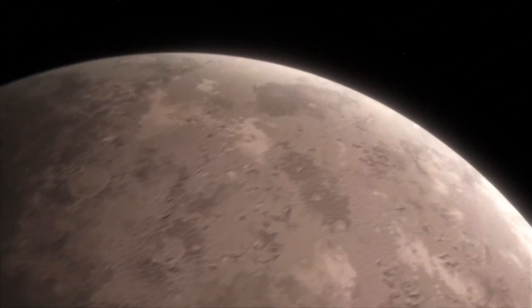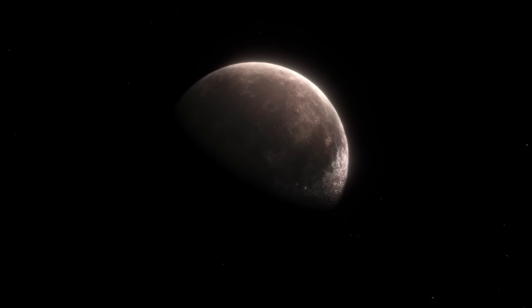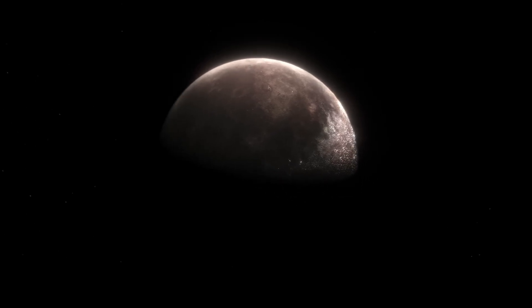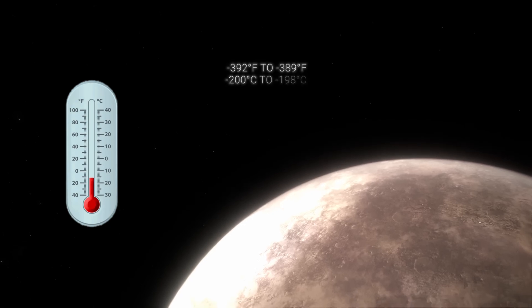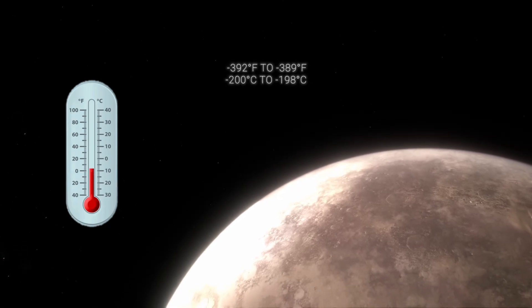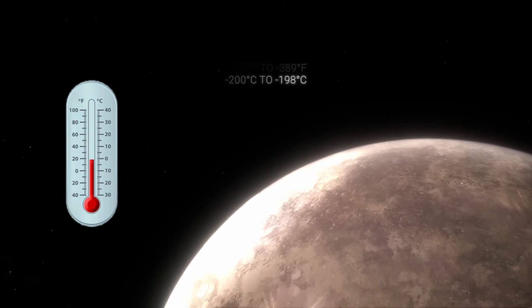Despite Triton's nitrogen-rich atmosphere, its low temperatures make it inhospitable for complex life due to limited heat retention caused by the thin atmosphere. However, with summers spanning 40 Earth years, Triton's seasonal changes have intrigued scientists. Recent observations indicate a slight temperature rise during Triton's summer, suggesting potential signs of global warming.